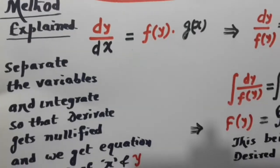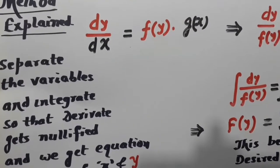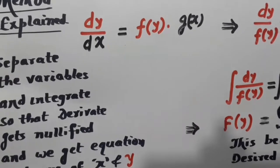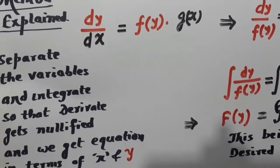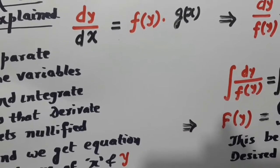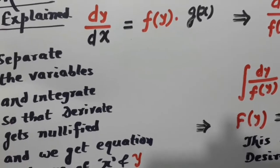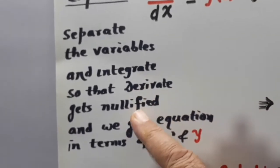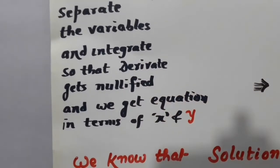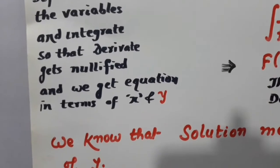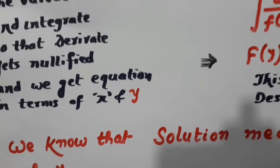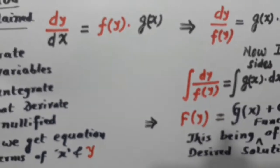Now, we have to separate the parents, that is we have to separate y on one side and x on other side. Separate the variables and integrate so that derivatives get nullified and we get equation in terms of x and y.